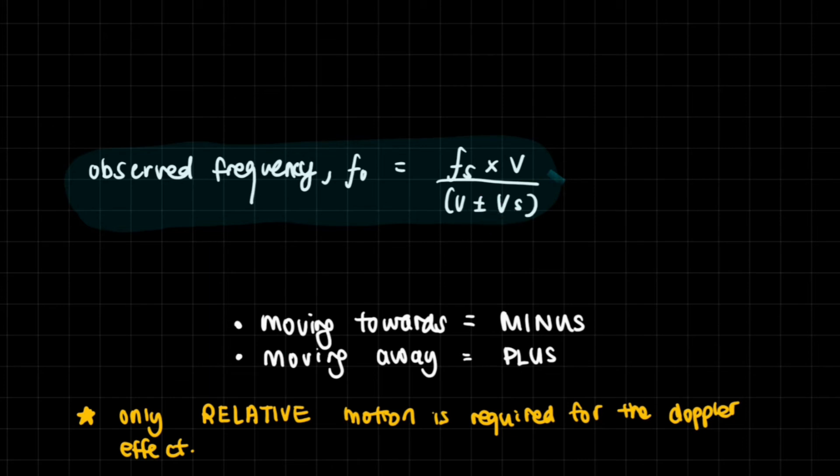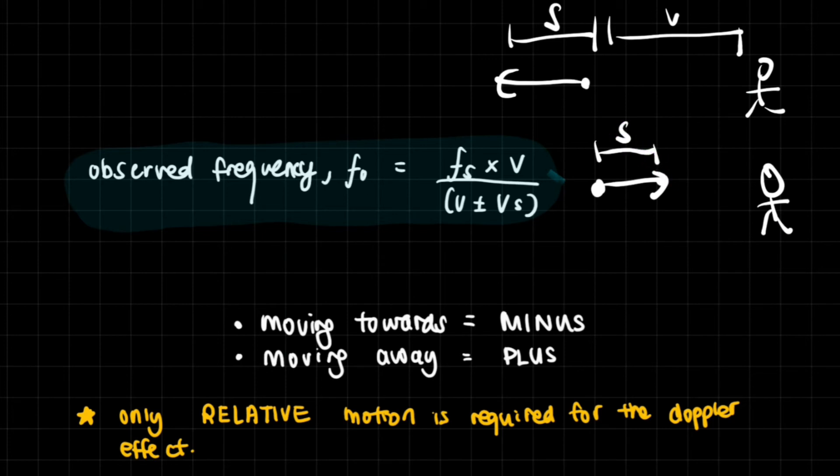So you get V times F_S divided by V_S plus V, and that is it. So that's our equation. Finally, this is the equation: observed frequency is the frequency of the source times the velocity of sound or the speed of light or whatever wave that you're trying to calculate.